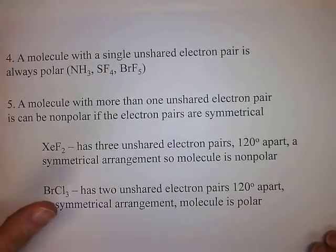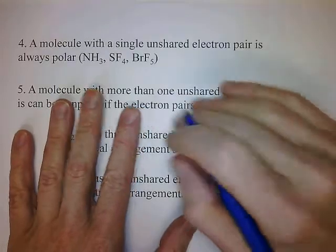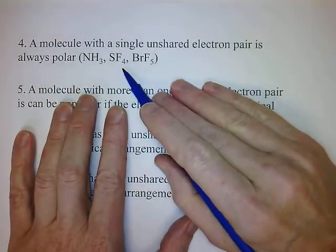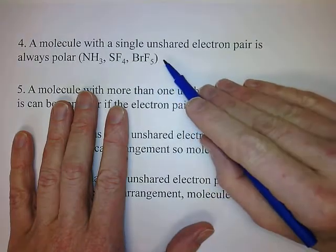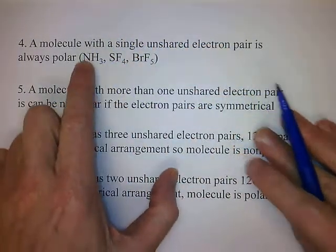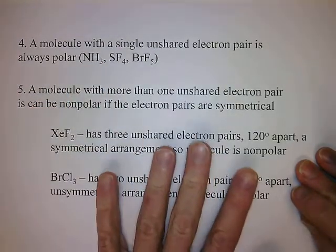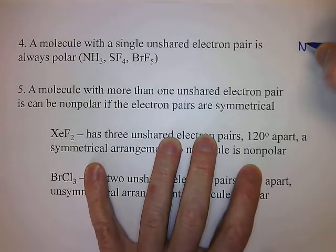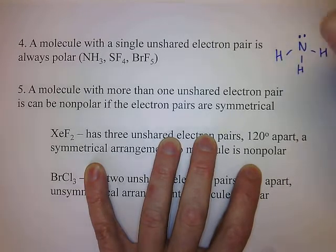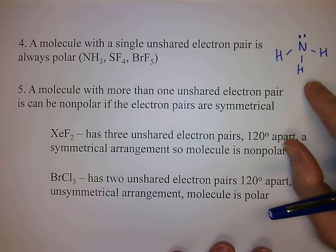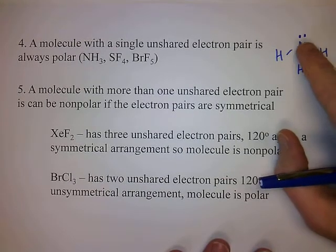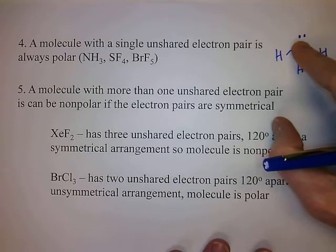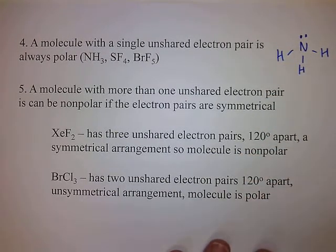A molecule with a single unshared electron pair is always polar — NH3, SF4 for example. If you look at ammonia, it has one lone pair on the nitrogen, giving a trigonal pyramidal shape. It's always going to be polar because there's nothing to balance out that one unshared pair. So any molecule with one unshared electron pair is always polar.